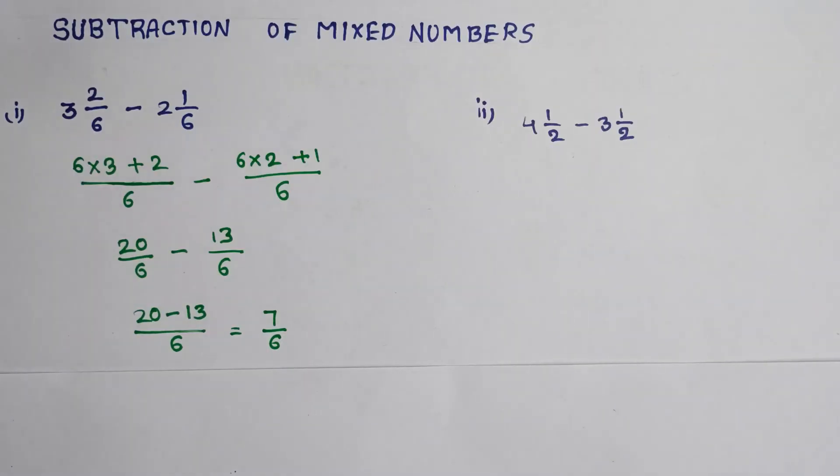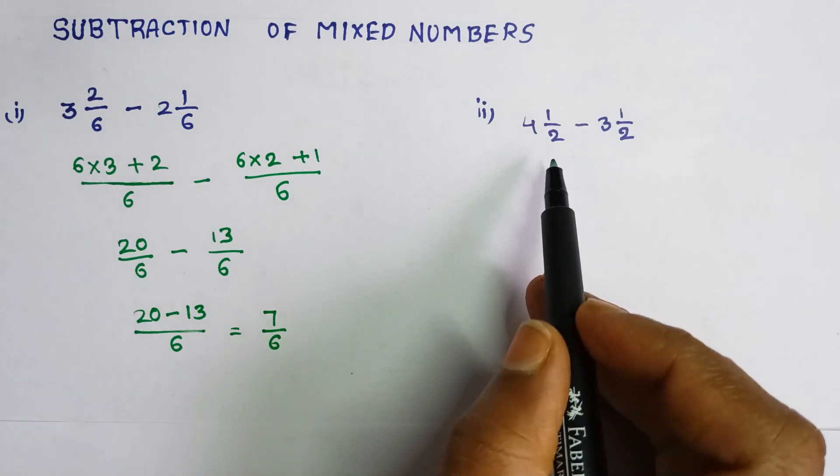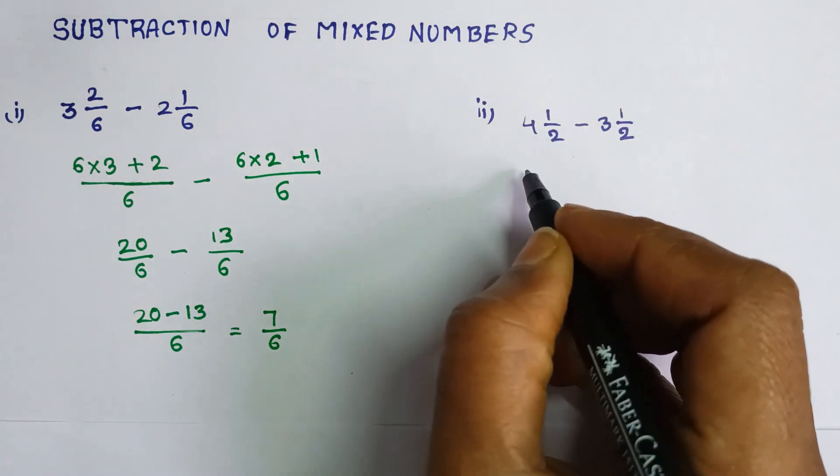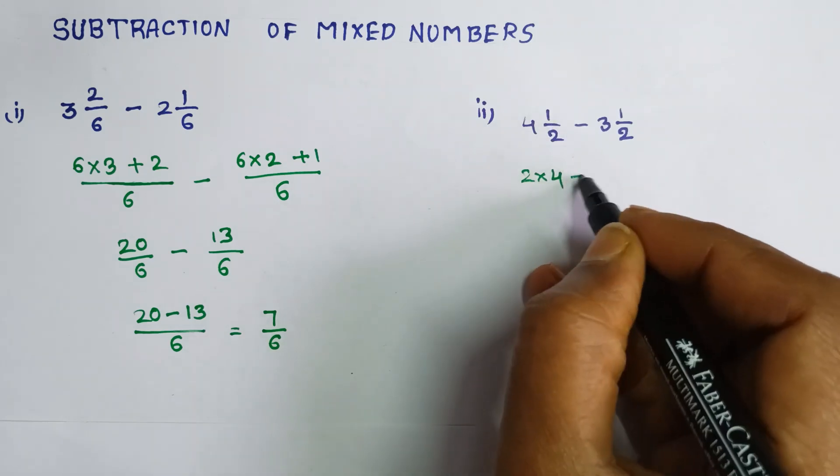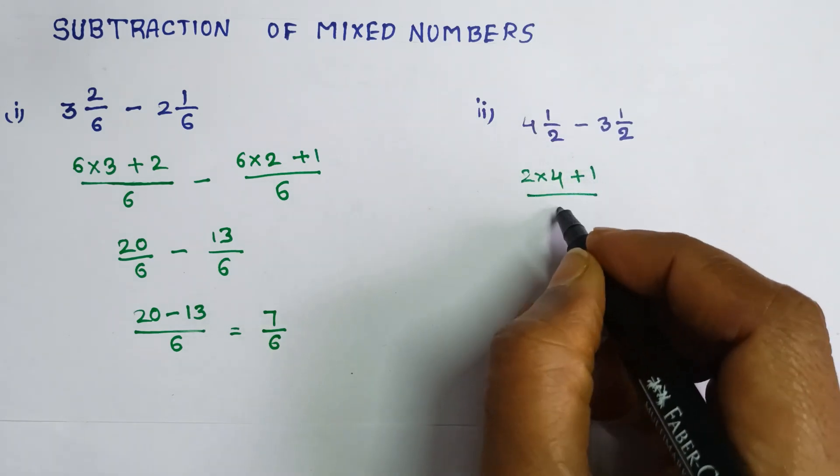We can see one more example: 4 and 1 by 2 minus 3 and 1 by 2. For this we need to convert this mixed fraction to improper fraction first. For that we will get 2 into 4 and add this 1 by 2.